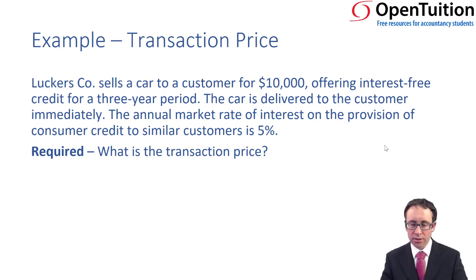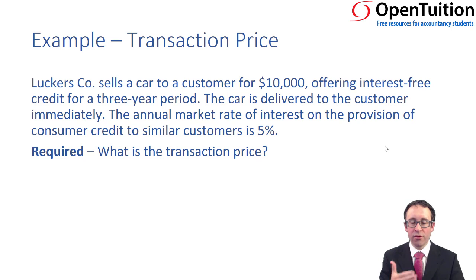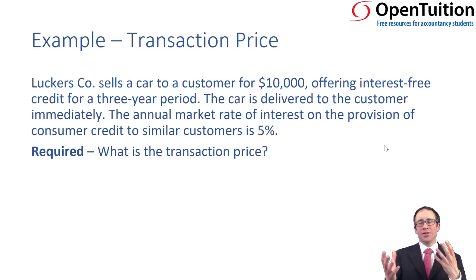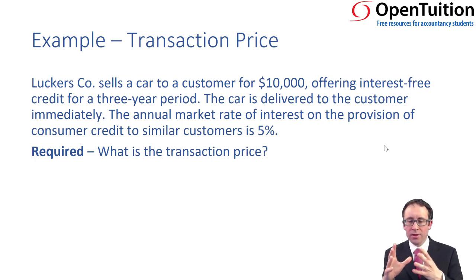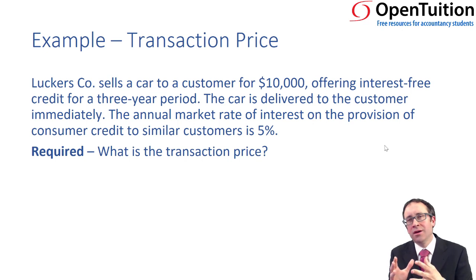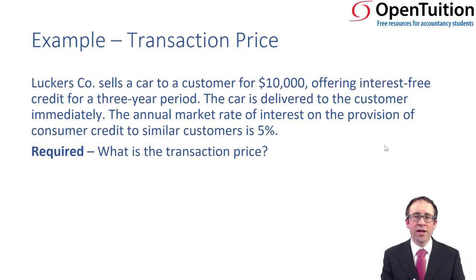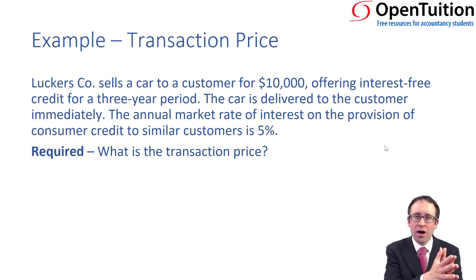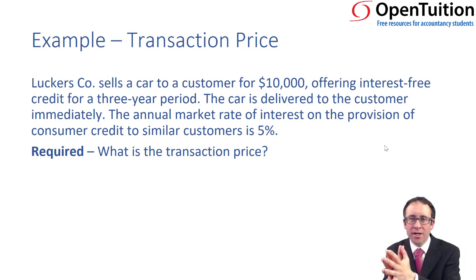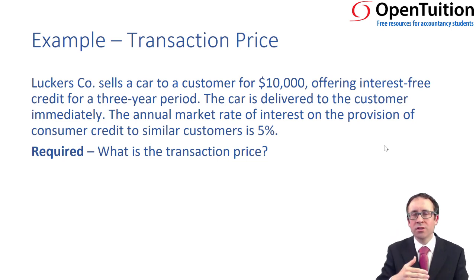So let's have a look at the example about the transaction price. You've got Lookers — sells a car to a customer for $10,000, offering interest-free credit for a three-year period. This is where IFRS 15 comes into the fore, because I've sold a car for $10,000 and I've also sold some free interest — and nothing in life is free. So of that transaction price, we need to allocate some of it to the car and some of it as interest, because there is interest income. We've effectively allowed the customer to pay much later than what they would have done today.